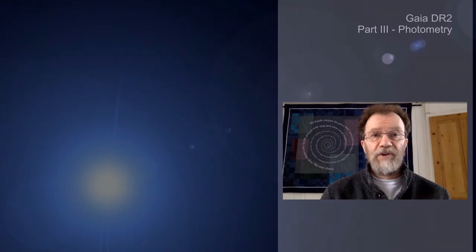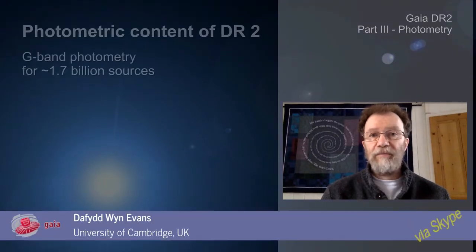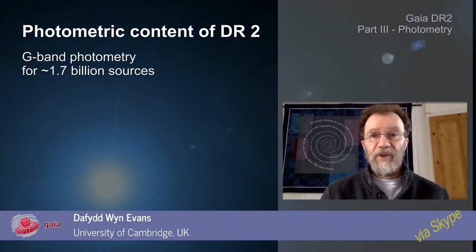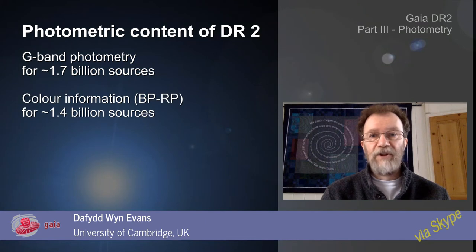The photometric content of DR2 consists of about 1.7 billion sources with G-band photometry and about 1.4 billion sources with BP-RP photometry, i.e. colour information. The addition of colour information is one of the major enhancements to the Gaia catalogue with respect to the first data release.